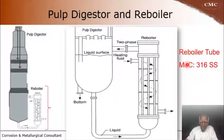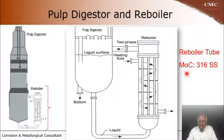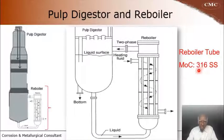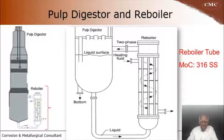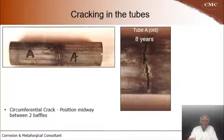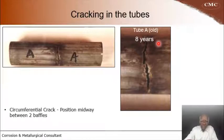These tubes, in this case, are made of 316 stainless steel — a typical austenitic stainless steel containing about 18% chromium, 8% nickel, and about 2–3% molybdenum — known for its generally good corrosion resistance. In this case, these 316 SS tubes failed in a relatively short period of 8 years.